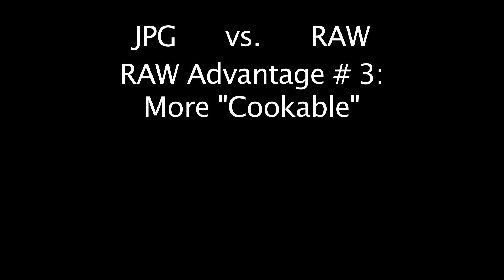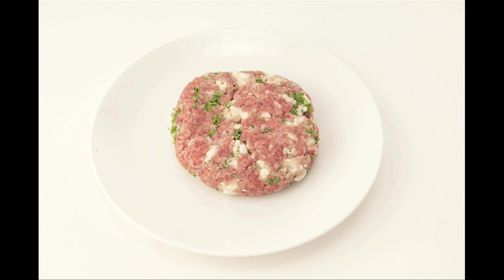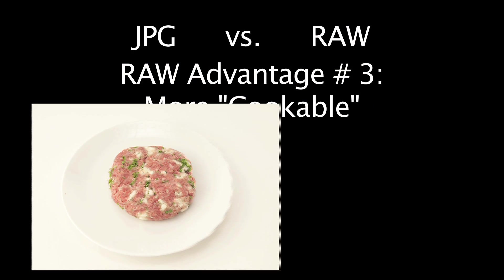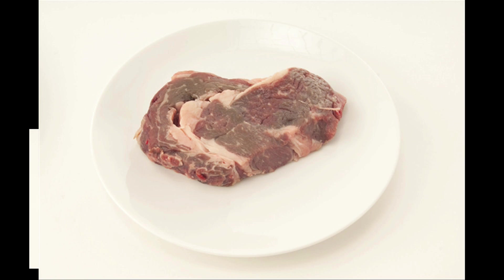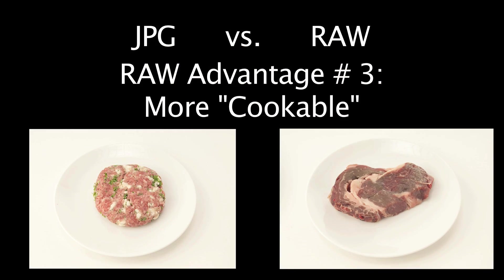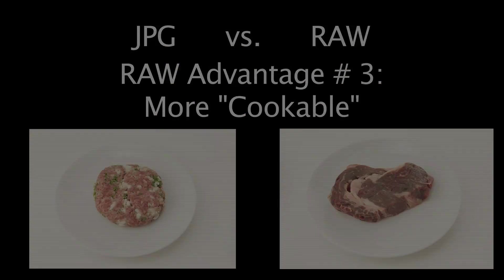Advantage three: higher cookability. JPEG is a pre-seasoned beef patty. Raw is a juicy USDA certified top sirloin.